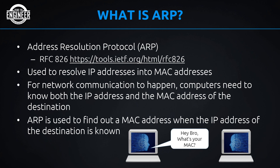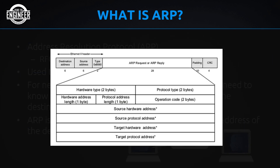Let's look at the actual ARP packet. The ARP packet sits inside an Ethernet frame — you can tell because we have an Ethernet header, source address, destination address, and the CRC check at the end. Inside the frame, the payload is the ARP request or ARP reply. Included in an ARP request or reply are: the source hardware address, source protocol address, target hardware address, and target protocol address — where hardware means MAC address and protocol means IP address.